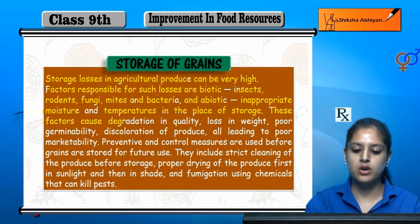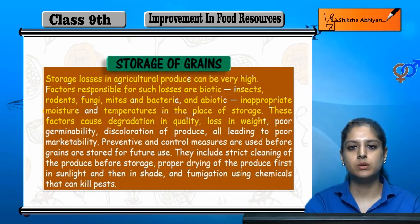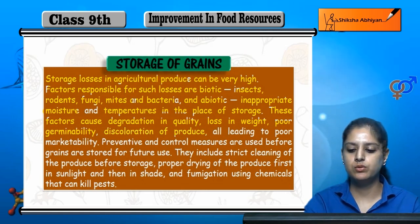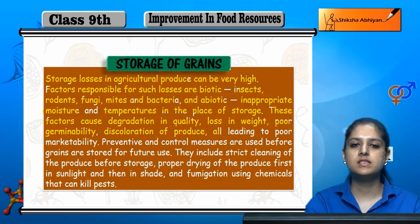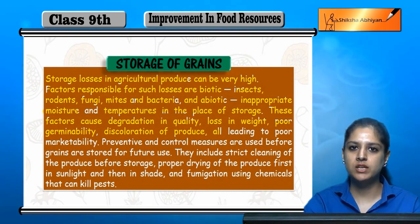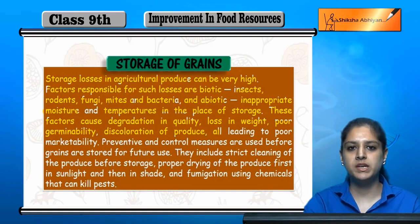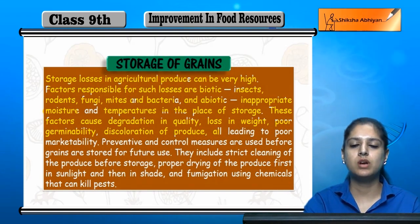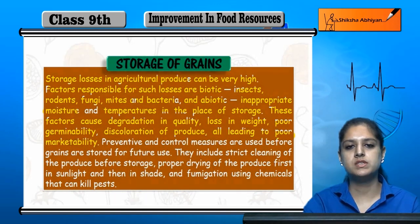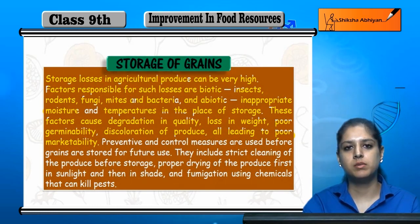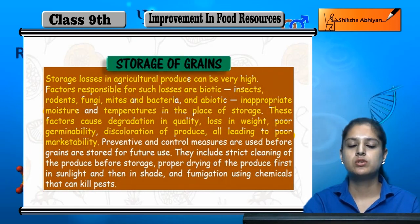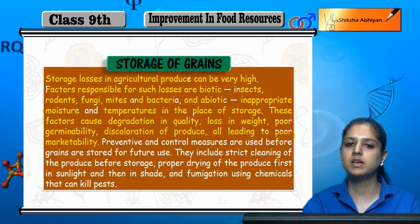These factors cause degradation in quality, loss in weight, poor germinability and discoloration of produce. The quality of the crop is less, weight is less, it cannot germinate properly and the color is discolored. All these lead to poor marketability — no one can buy or sell it in the market. The crop ultimately becomes poor and unusable.